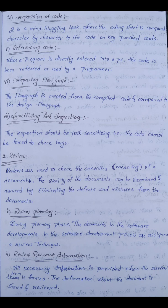The first step is review planning. During the planning phase, documents in the software development process are assigned to a review technique. In the planning phase, the plan is reviewed and major document information is identified.